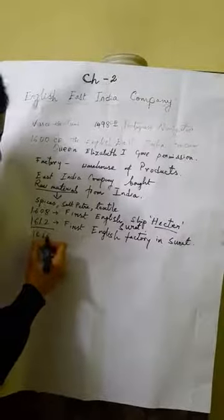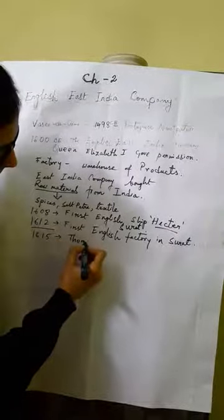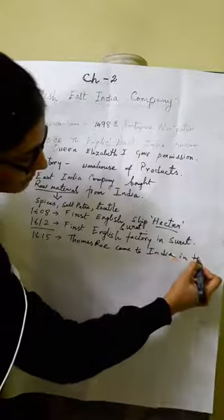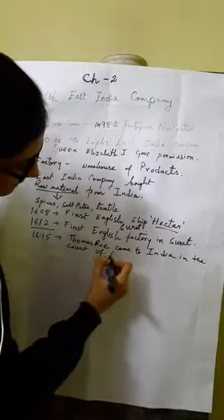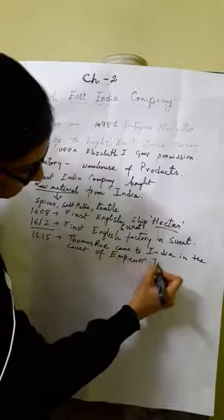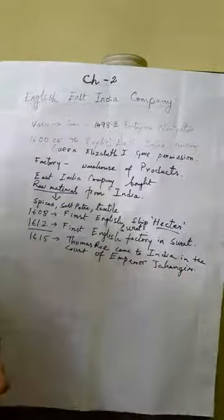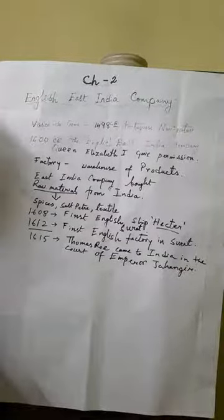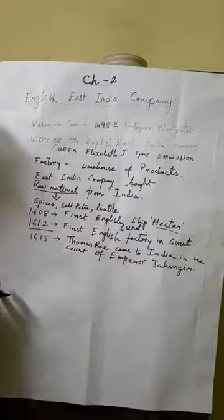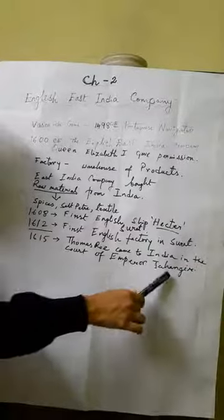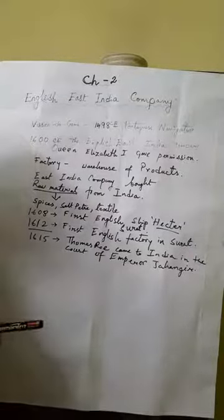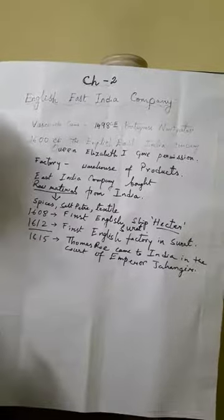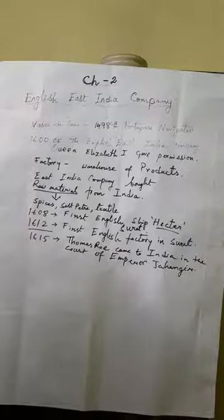The next important date is 1615 CE, when Sir Thomas Rowe came to India to the court of Emperor Jahangir. Sir Thomas Rowe came to India to negotiate about the English East India Company. This date is important as the English got many concessions from the Mughal Emperor Jahangir. The English East India Company started flourishing in India from 1615 CE.